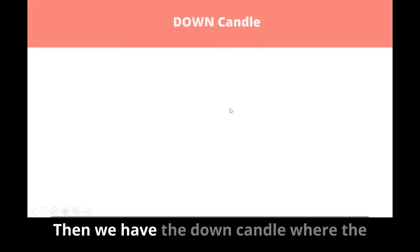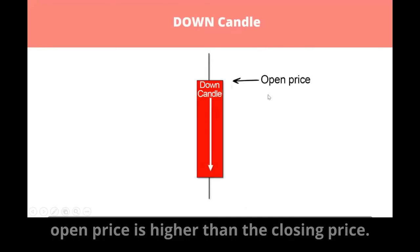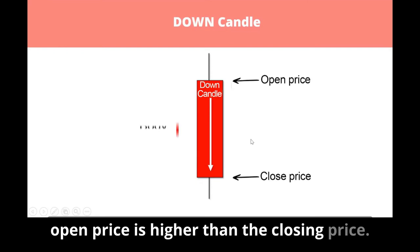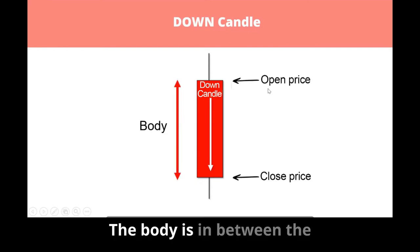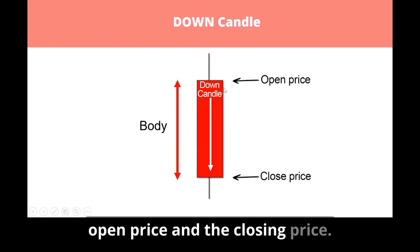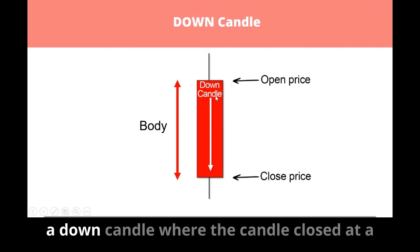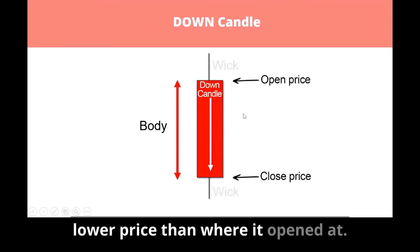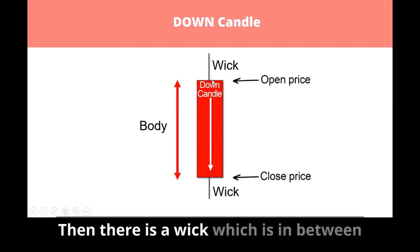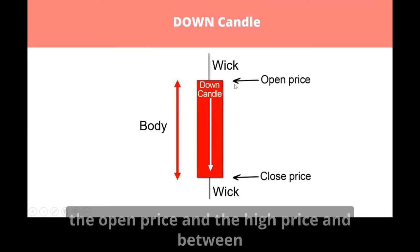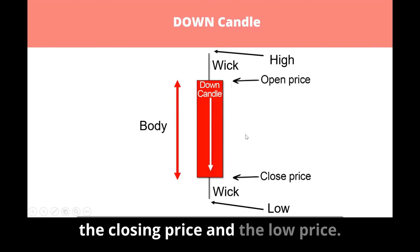Then we have the down candle, where the open price is higher than the closing price. The body is in between the open price and the closing price. Because I choose red, it means that it's a down candle where the candle closed at a lower price than where it opened. There is also a wick between the open price and the high, and between the closing price and the low.